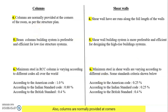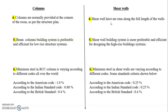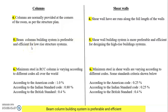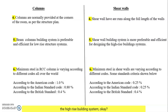Columns are normally provided at corners or at the ends of rooms as per the structural design, whereas shear walls run along the full length of the walls. A beam-column building system is preferable and efficient for low-rise structures, but a shear wall system is more preferable and efficient for designing high-rise building systems.